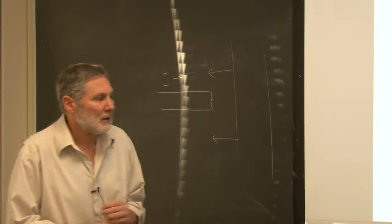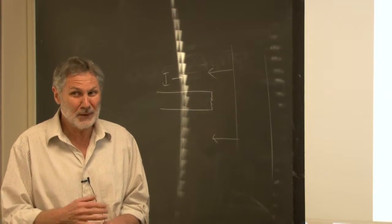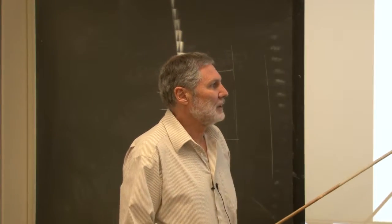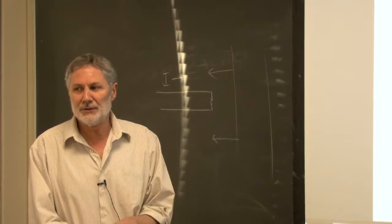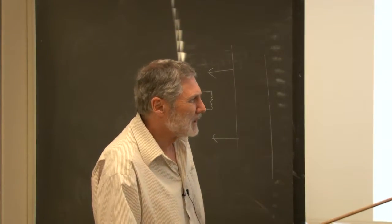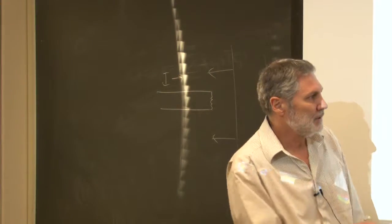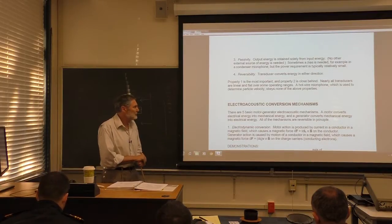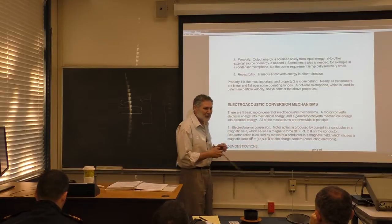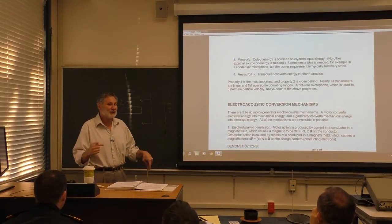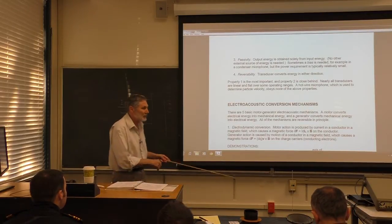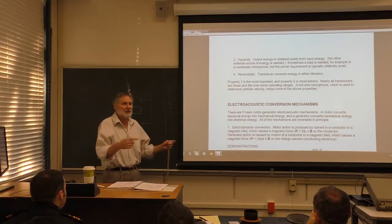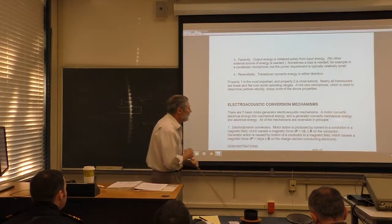There are five different categories of electroacoustic conversion mechanisms — or electromagnetic acoustics, since when we say electro, we're also including magneto. To understand this classification, recall the motor and the generator. A motor converts electrical energy to mechanical energy. A generator is the reverse: you have mechanical energy, like turning a crank, and you generate electrical energy.